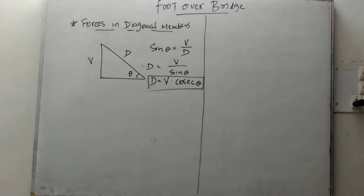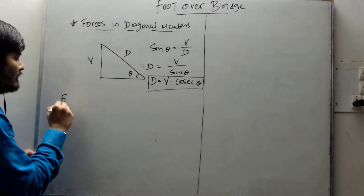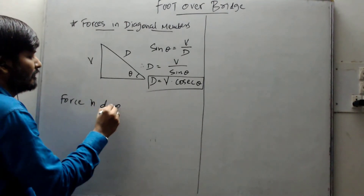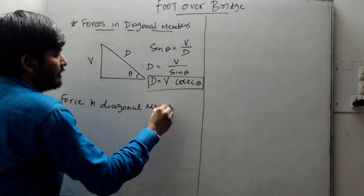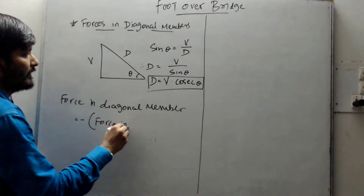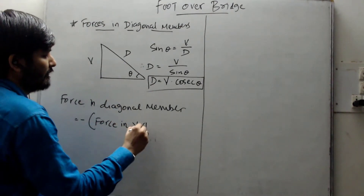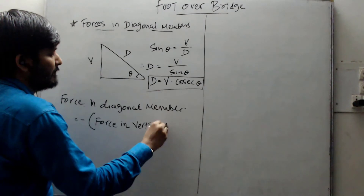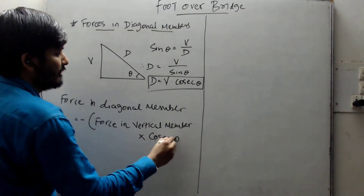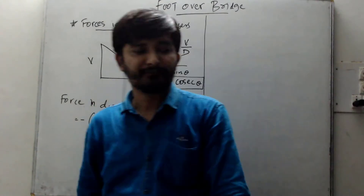D becomes V times cosec theta. The force in the diagonal member is equal to the force in the vertical member multiplied by cosec theta, with a negative sign. So: Force in diagonal member = −(Force in vertical member) × cosec theta.